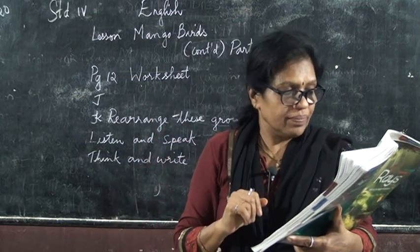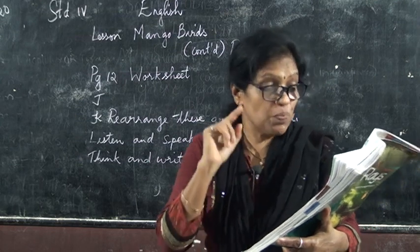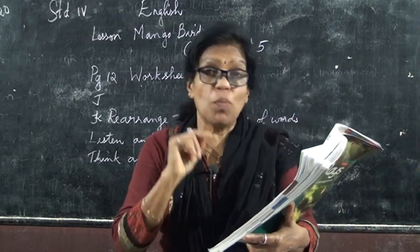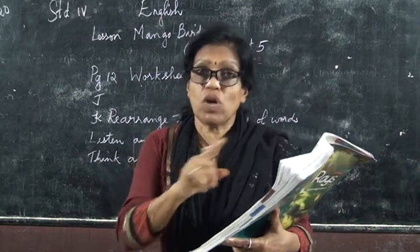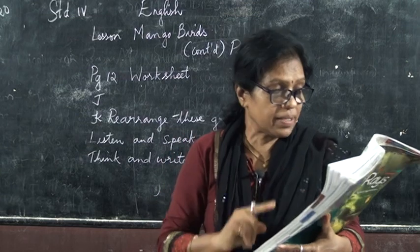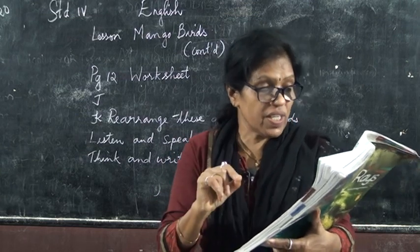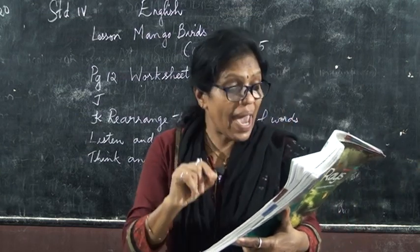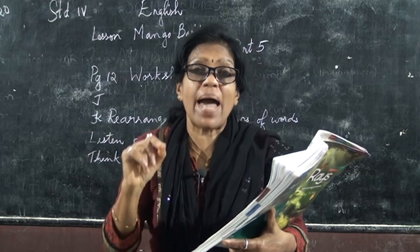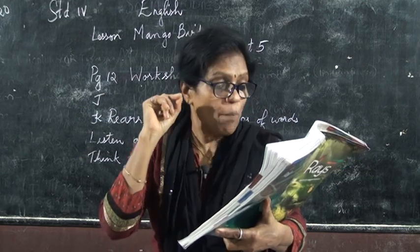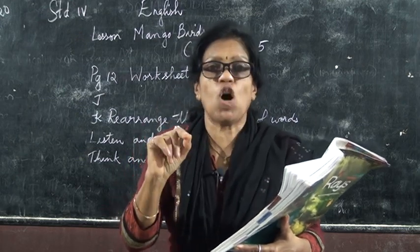Third scrambled sentence: 'The branches beautiful mango blossom were covered with.' The correct sentence with a capital letter at the beginning is: 'The branches were covered with beautiful mango blossom.' Full stop at the end.